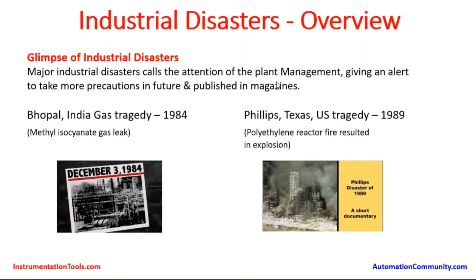Major industrial disasters call attention from plant management, prompting more precautions, and are published in magazines. Two examples shown here are the Bhopal, India gas tragedy (1984), a methyl isocyanate gas leak published in a magazine, and the Phillips, Texas explosion (1989), a polyethylene reactor fire resulting in an explosion with gas engulfing the plant area — both causing significant damage to surrounding communities.